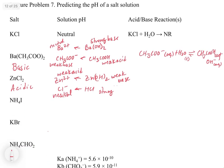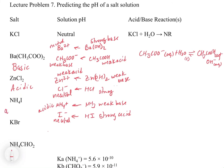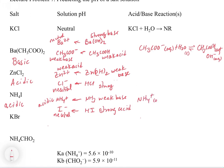For ammonium iodide, we have NH4+ and I-. The conjugate for ammonium is ammonia, which is a weak base - making ammonium a weak acid. The conjugate for I- is HI, a strong acid, so iodide is neutral. Therefore this is an acidic salt. The reaction is: NH4+(aq) + H2O(l) ⇌ H3O+(aq) + NH3(aq).